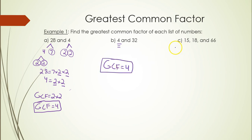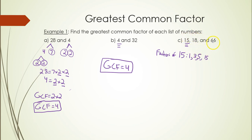For part c with 15, 18, and 66, the smallest number is 15. Since 66 is not divisible by 15, we list the factors of 15 and check which divide all three numbers. 66, 18, and 15 are all divisible by 3, so the GCF — the highest number each is divisible by — is 3.